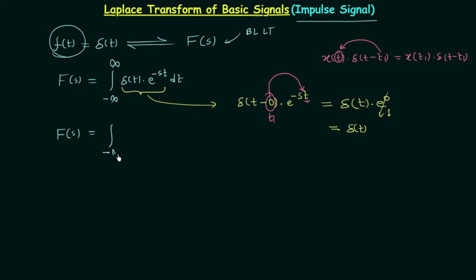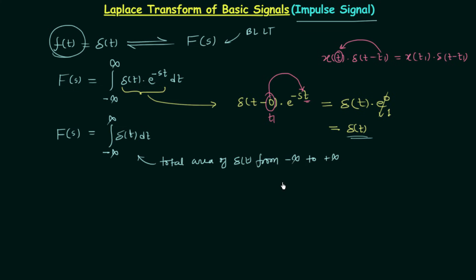The bilateral Laplace transform is equal to the integration from minus infinity to infinity of δ(t) only. This gives us the total area of δ(t) from minus infinity to plus infinity. We know the total area of δ(t) is equal to 1, and the origin is included between minus infinity and plus infinity, so the result of the integration is 1. Therefore F(s) = 1.